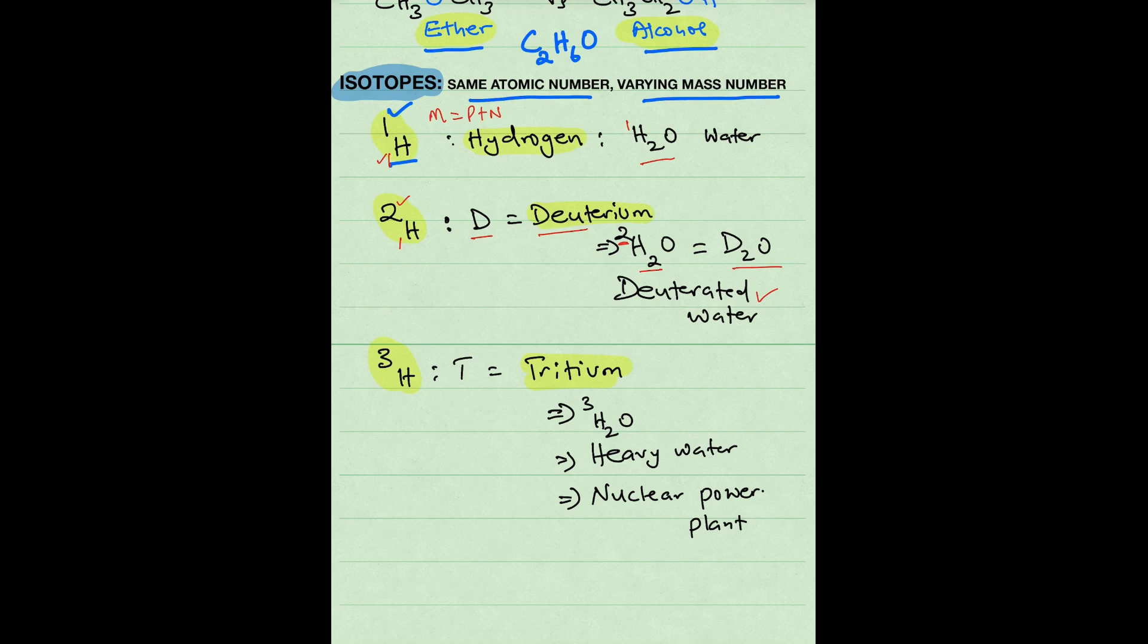The last isotope of hydrogen is tritium, and now you have a mass of 3 and you have an atomic number of 1. So that means you have 2 neutrons.